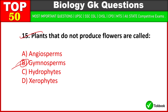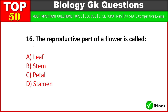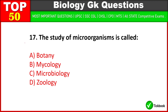Plants that do not produce flowers are called gymnosperms — option B is the right answer. The reproductive part of a flower is called a leaf — option A is the right answer.